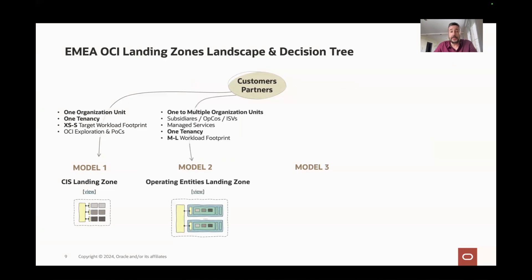That's why we have the Operating Entities landing zone. It's designed to hold multiple organization units — subsidiaries, departments, OPCOs, lines of business, ISVs, even managed services for some specific workloads. There's segregation of identity and access management at many levels that allow you to do this. It's designed for one tenancy and can hold a large workload footprint.